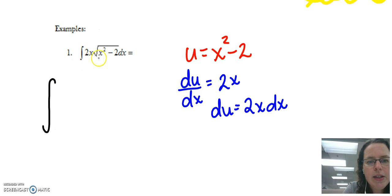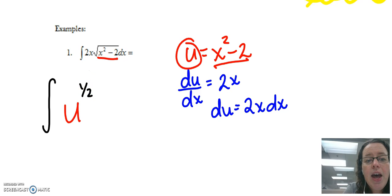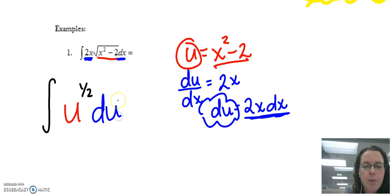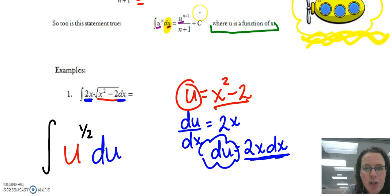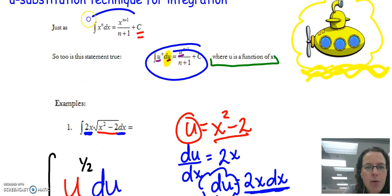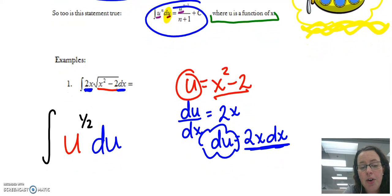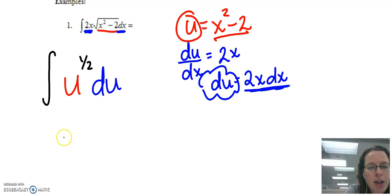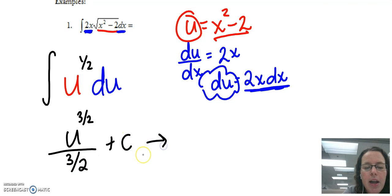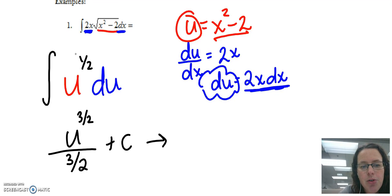Making substitutions in the integral: we replace x²-2 with u, giving u to the one-half power, and we replace 2x dx with du. Now the integral is in the same format as our power rule. Taking the antiderivative gives u^(3/2) divided by (3/2) plus C. Since we started with x's, we undo the substitution and replace u with x²-2.